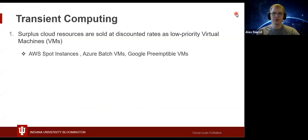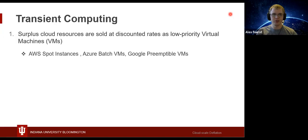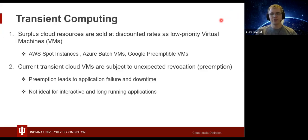Transient computing has been receiving increasing amounts of attention. These cloud offerings allow providers to sell surplus cloud resources at discounted rates to customers as low-priority virtual machines or VMs. There are many offerings of such VMs, including AWS Spot Instances, Azure Batch VMs, and Google Preemptible VMs. The downside is the unexpected revocation or preemption of the VM and its resources when the provider reclaims them to make room for traditional on-demand VMs.